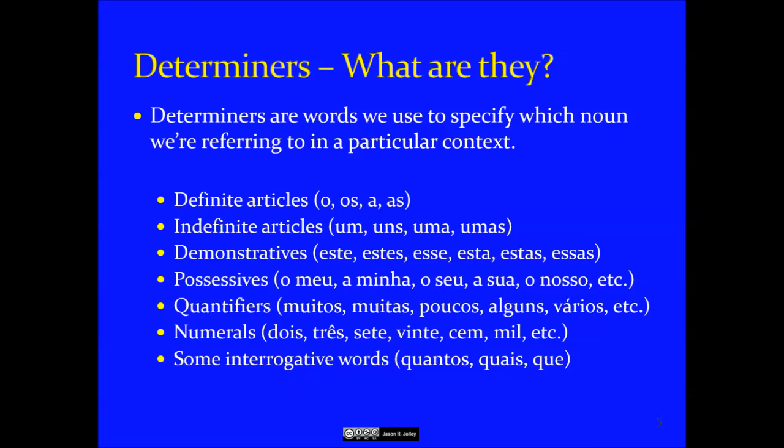Moving on to determiners — words we use to specify which noun we're referring to. These include definite articles (the word for 'the'), indefinite articles (a, an, some — or in Portuguese: um, uns, uma, umas), demonstratives, possessives, quantifiers, numerals, and some interrogative words. Determiners function more to specify than to describe, but because they behave much like adjectives, they're often classified alongside adjectives.